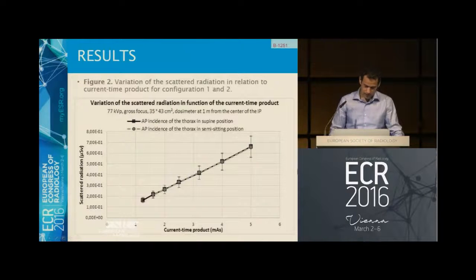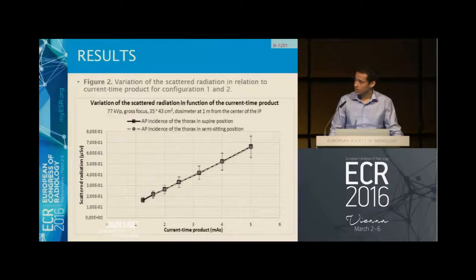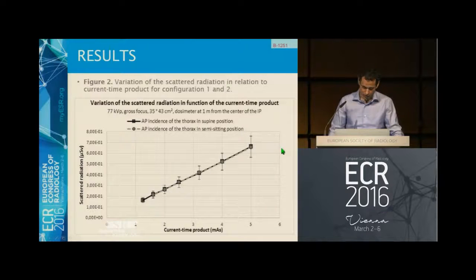In figure two, we have the variation of scattered radiation in relation to the current-time product. As expected, it is proportional.